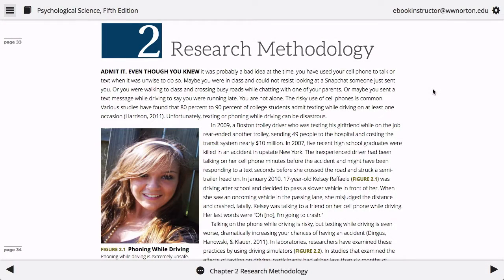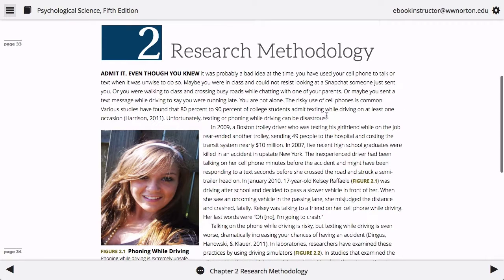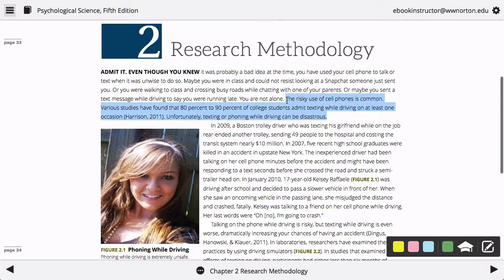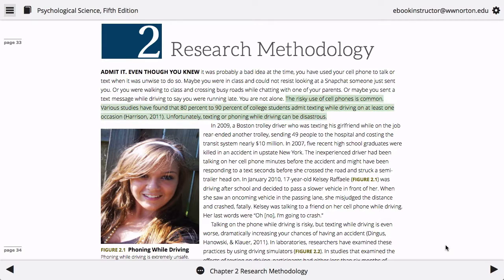Once inside the eBook, creating a shared highlight or note is easy. First, use your cursor to select a body of text. To create a highlight that's shared with your students, select the green highlight button. Selecting another highlight color will create a highlight in your eBook but will not share the highlight with students.